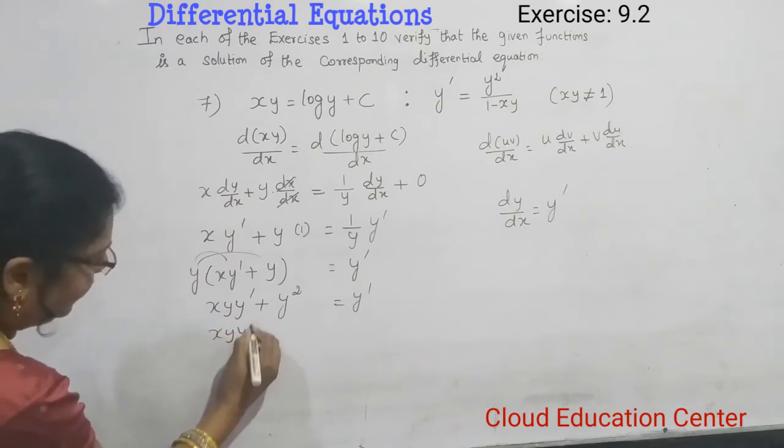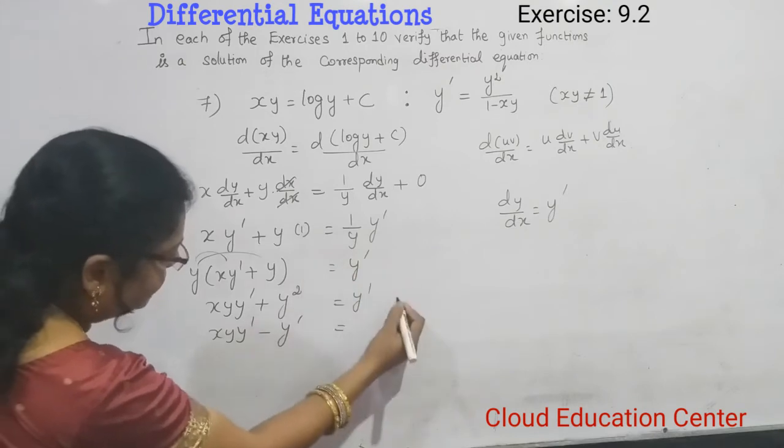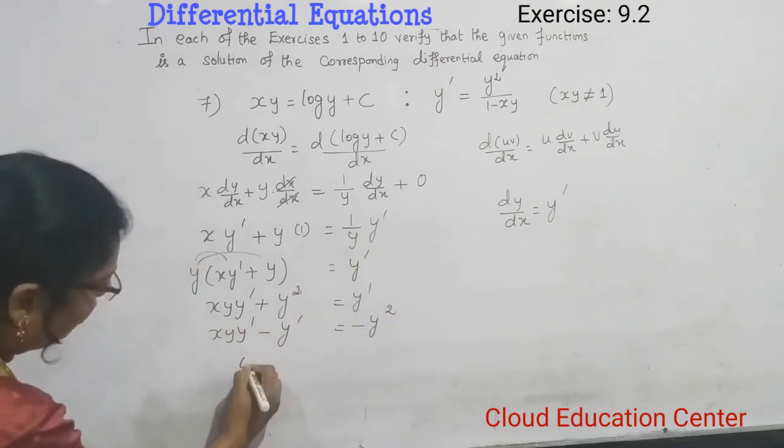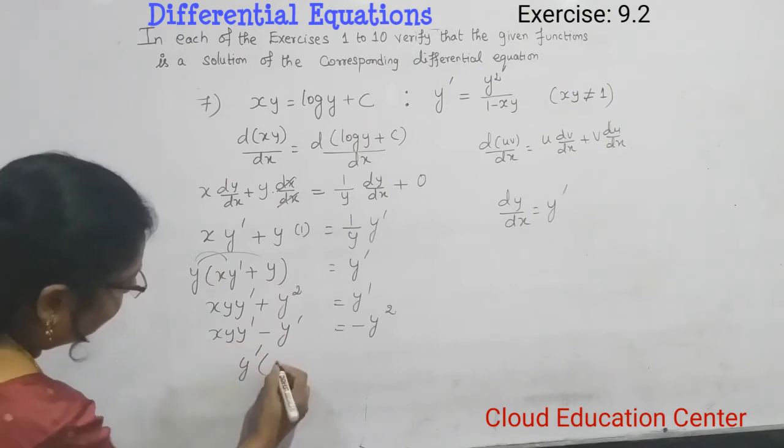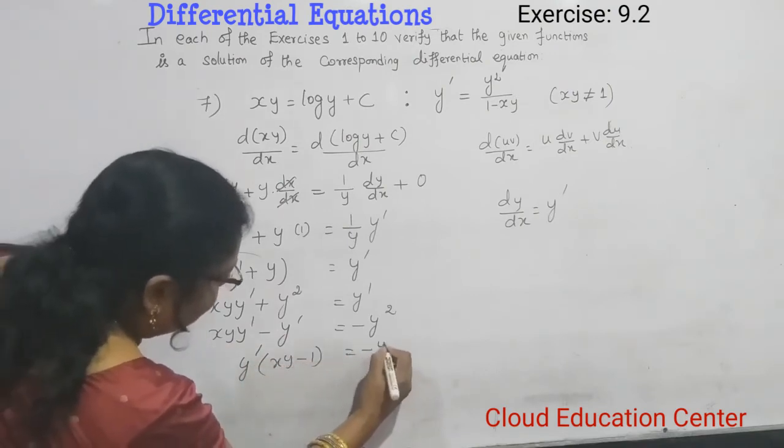xy y dash minus y dash equals, when it goes here, it becomes minus y square. Now we will take out common y dash. So what will be written here? y dash times (xy minus 1) equals minus y square.